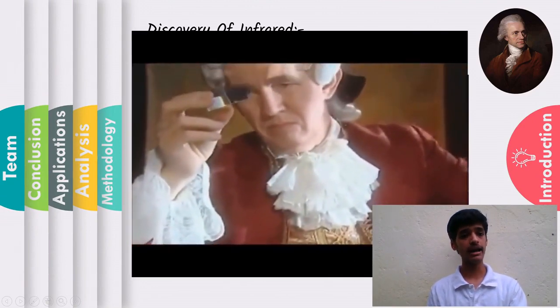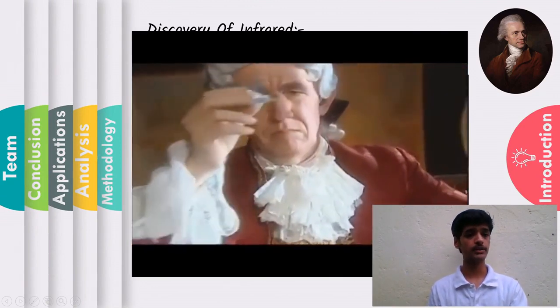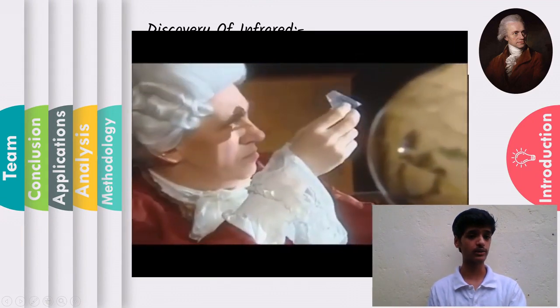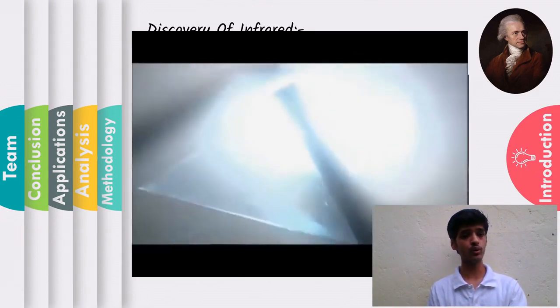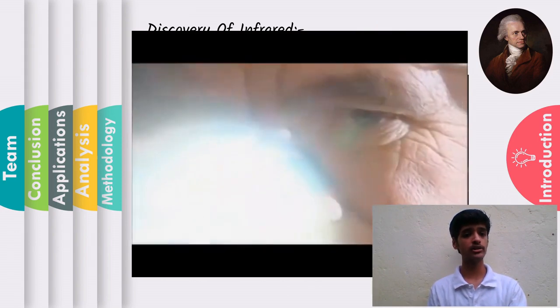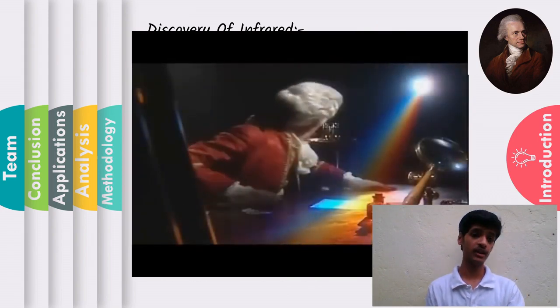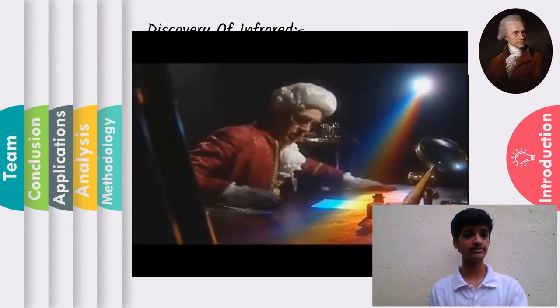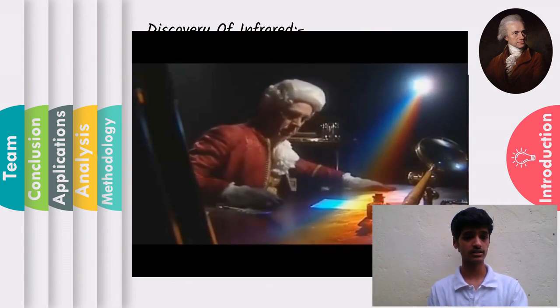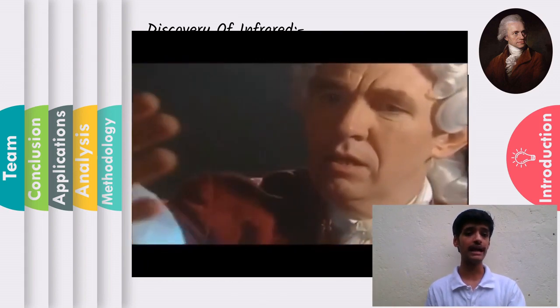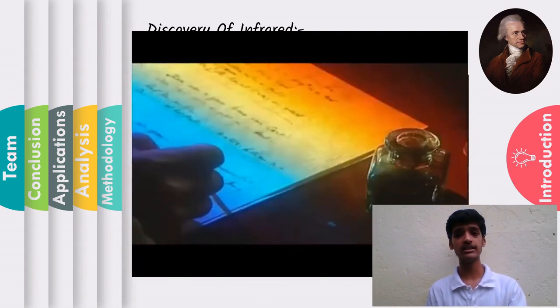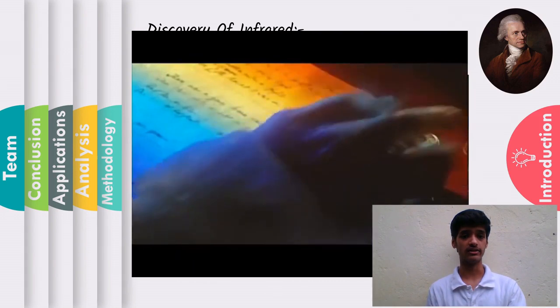Herschel wanted to know how much heat passed through the different colors of sunlight. We know that sunlight is composed of seven colors. Herschel thought that these colors themselves are carriers of varying heat, so he planned a clever experiment to measure the temperatures of each color.